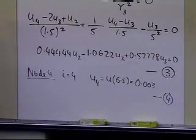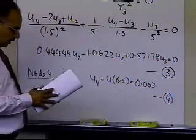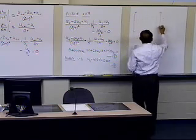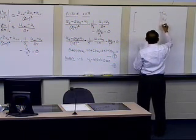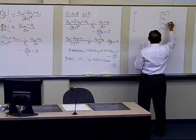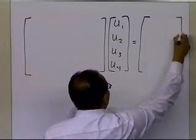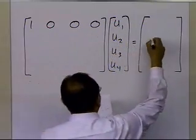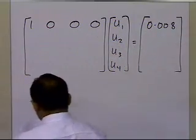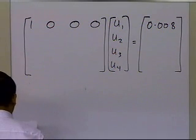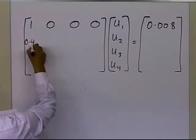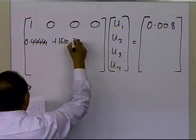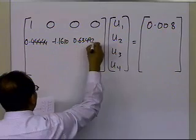Now I have four equations and four unknowns, so I can write them in matrix form. The unknowns are u_1, u_2, u_3, u_4. The first equation gives the row 1, 0, 0, 0 — since it's simply u_1 equal to 0.008. The next row from the finite difference approximation gives 0.444444, minus 1.1610, 0.63492, and 0.